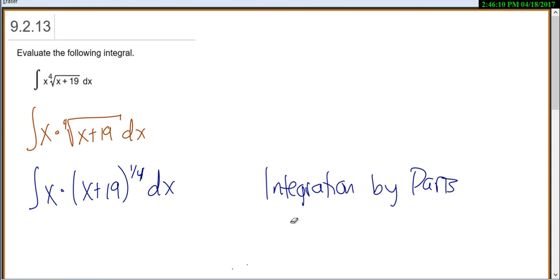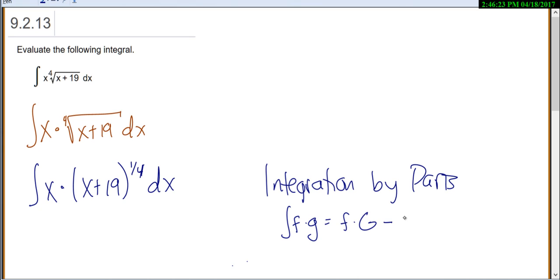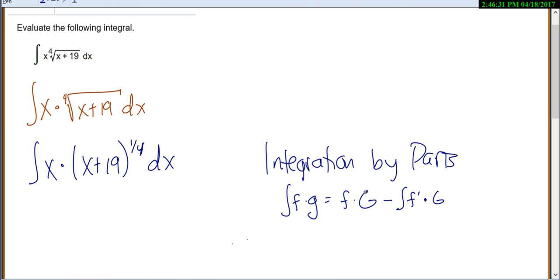Now our formula for integration by parts says if you have the integral of f times g, then this is f times capital G minus the integral of the derivative of f times capital G. Now capital G means that you have to integrate g. So let's look at our problem here. Let's let x be our f, usually the least complicated thing is going to be our f, and let's let this whole piece be our g.